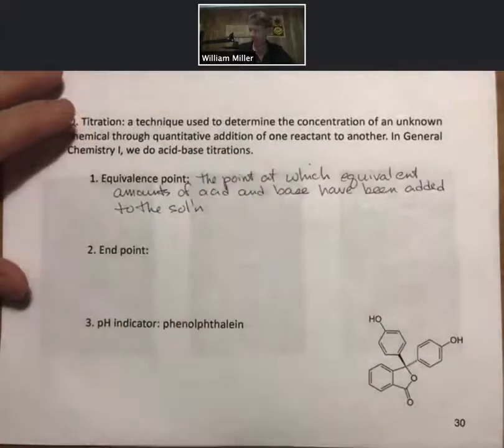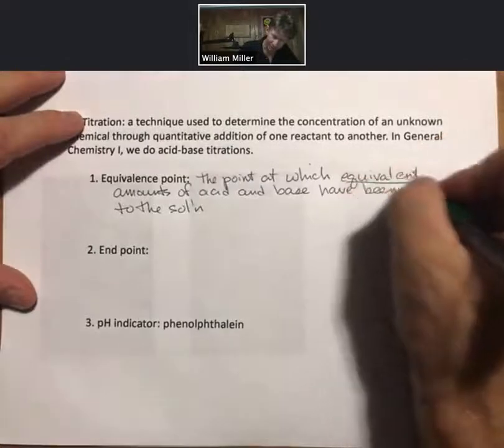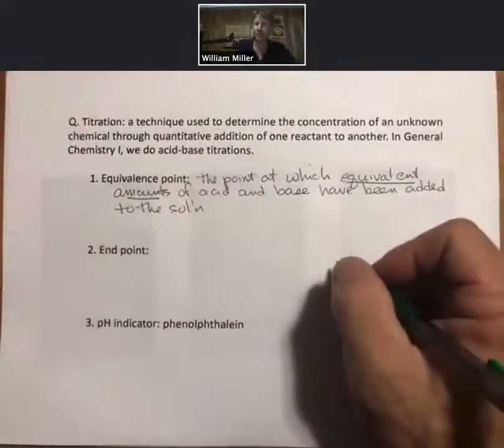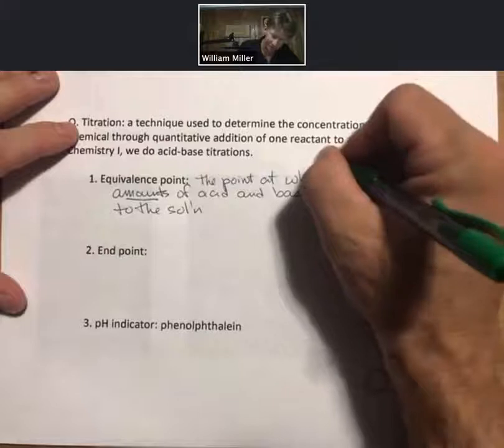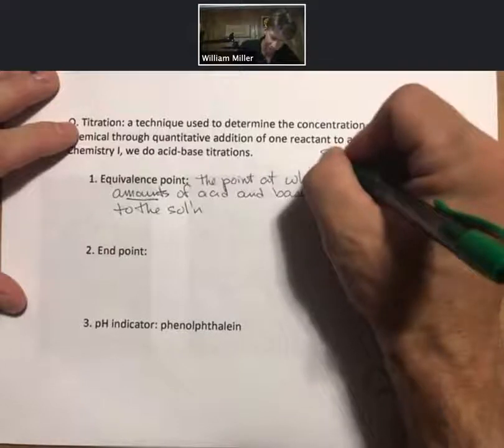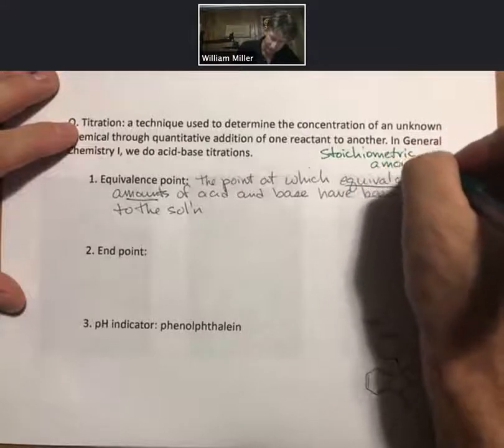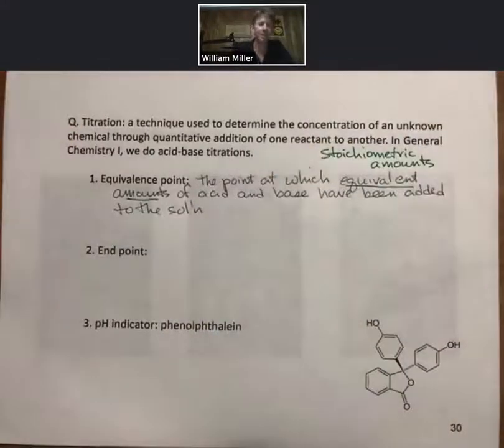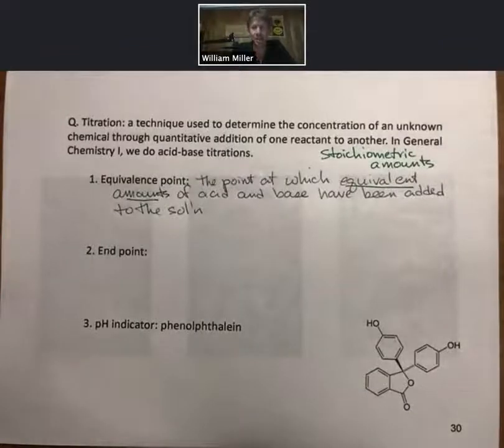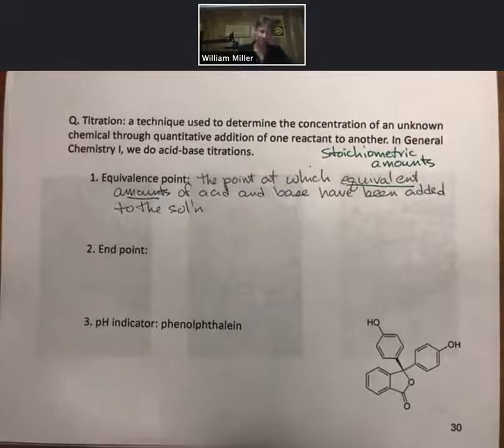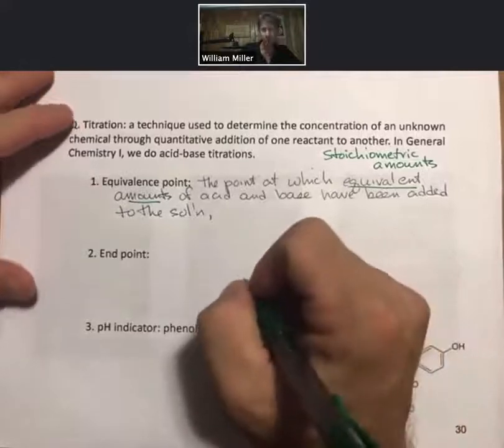The point at which equivalent amounts of acid and base have been added to the solution. And for us, equivalent amounts, another way of saying that is stoichiometric amounts. The point at which both reactants are limiting. You've run out of both of the reactants.